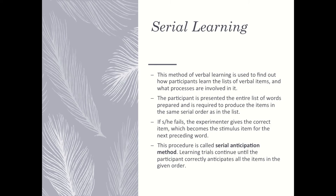The next method is serial learning. 'Serial' means a particular order or sequence. In serial learning, we observe how a participant remembers the correct sequence of a jumbled group of words or letters. This method is used to find out how participants learn a list of verbal items and what processes are involved in that learning.